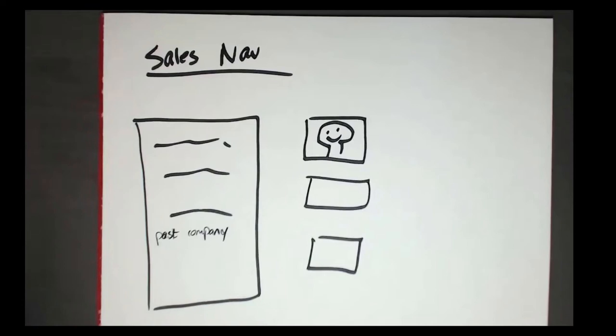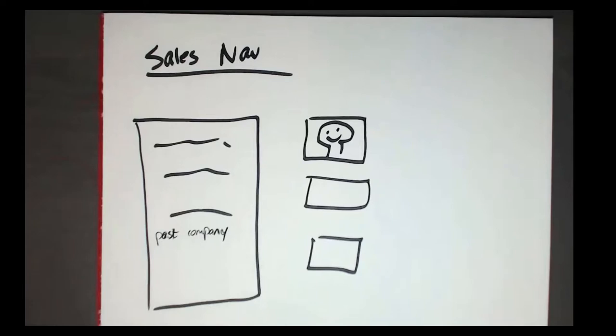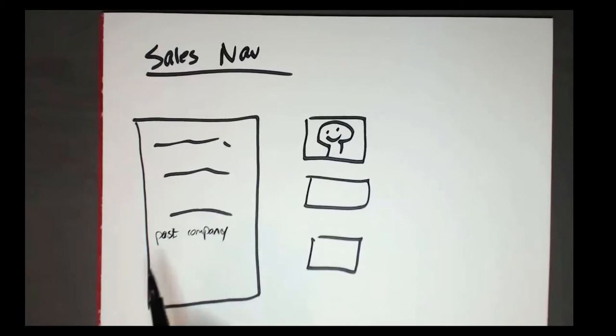What you can do with the Past Company filter is two things. First, you can take existing customers of your current company — whether you're selling software or professional services — put those companies into the filter, and run a persona-based search. For example, searching for Chief Revenue Officers and VPs of Sales, then putting current clients in the Past Company filter lets you see people who used to work at a client company and have since moved on.